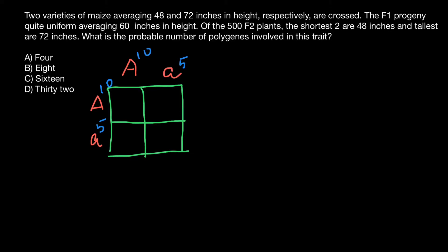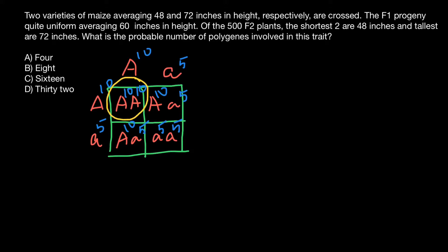Here are the genotypes: AA, Aa, and aa. How many phenotypes do we have? 10 + 10 = 20 centimeters — that's one phenotype. 10 + 5 = 15 centimeters — that's the second phenotype. And 5 + 5 = 10 centimeters — that's the third phenotype. So you now have an understanding of what an additive trait is.